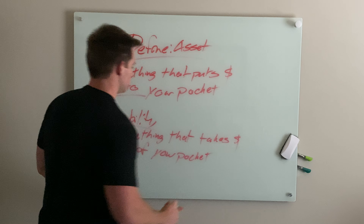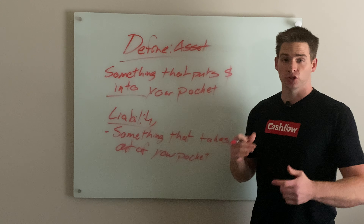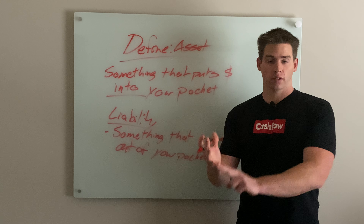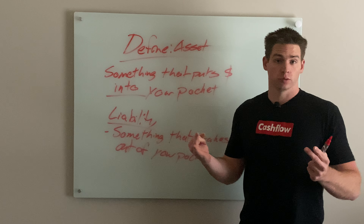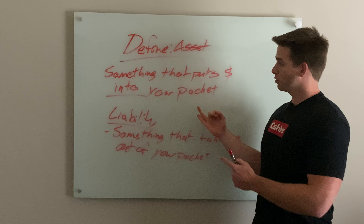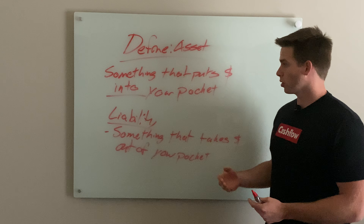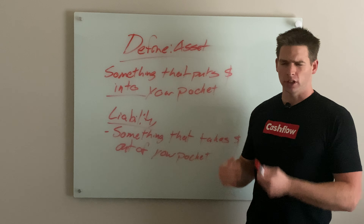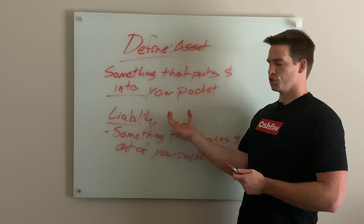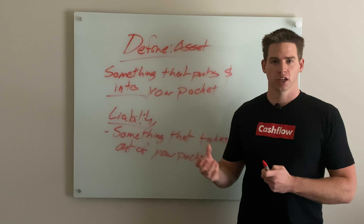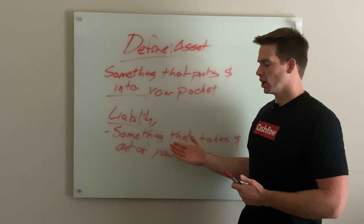Let's go over what can be an asset and what can be a liability. A house could be an asset or it could be a liability. A friend could be an asset and a friend could be a liability. A business partner could be an asset or a liability. The list goes on and on. What we're talking about is just an object and how that object either serves us or takes away from us.